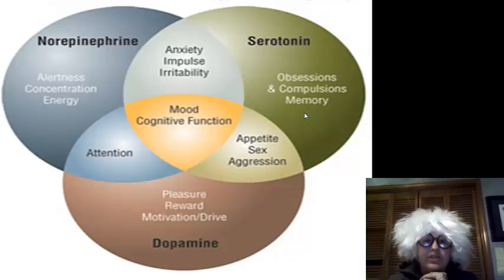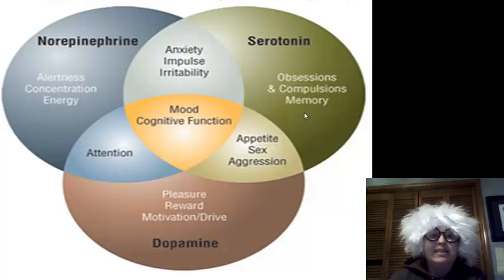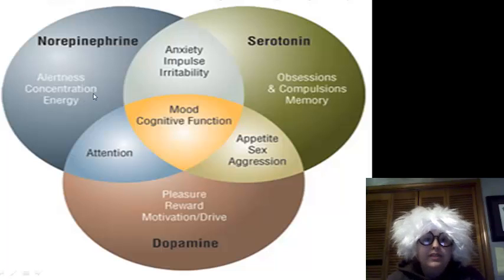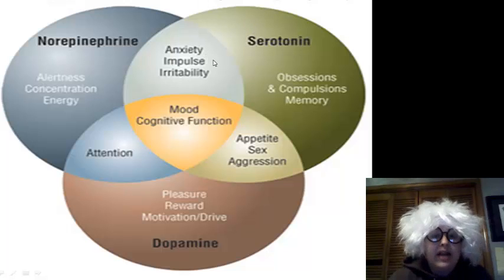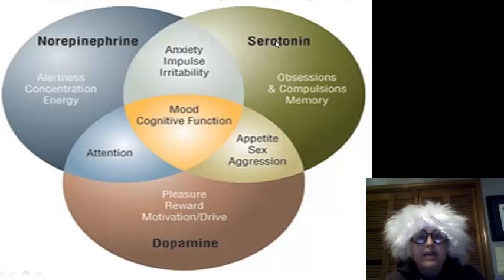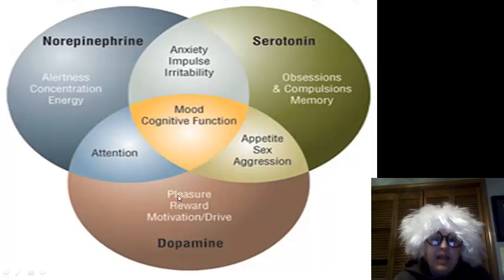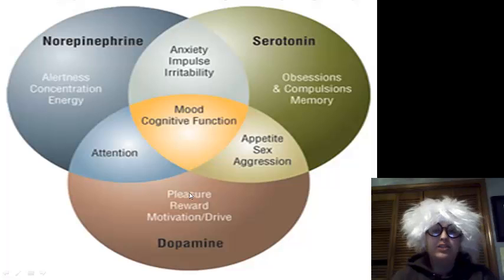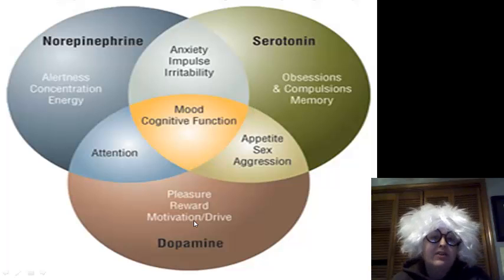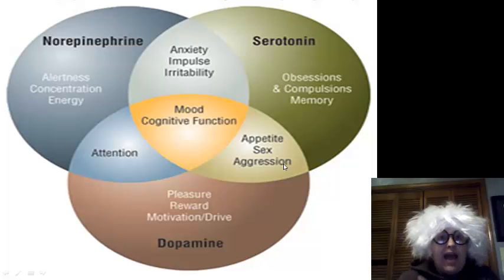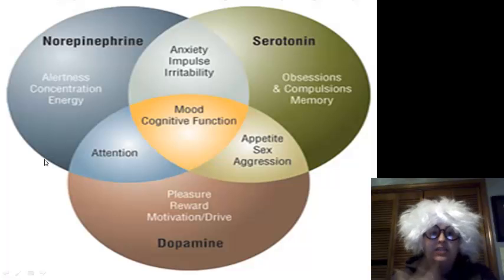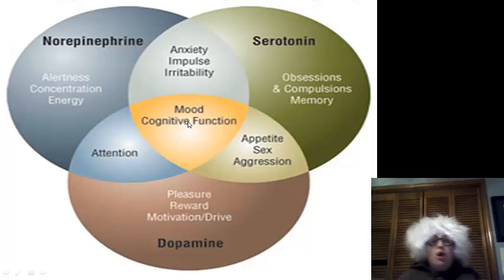When we look at neurotransmitters in combination, we see different things. Norepinephrine is for alertness, concentration, and energy, but when combined with serotonin can cause anxiety, impulses, and irritability. Serotonin by itself is for obsession, compulsion, and memory. Dopamine is for pleasure, rewards, motivation, and drive. When serotonin and dopamine come into play, we have appetite, sex, and aggression. When norepinephrine combines with dopamine, we have attention. And when all three come together, it creates our mood and cognitive function.